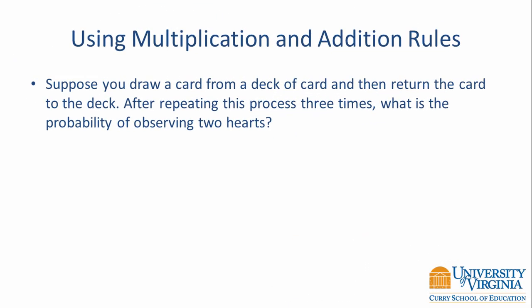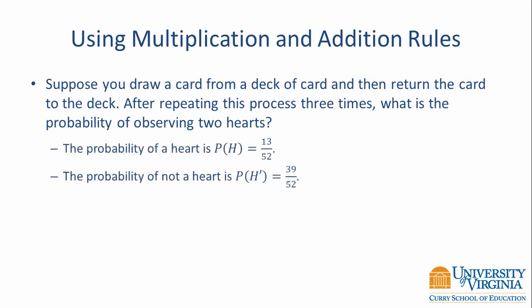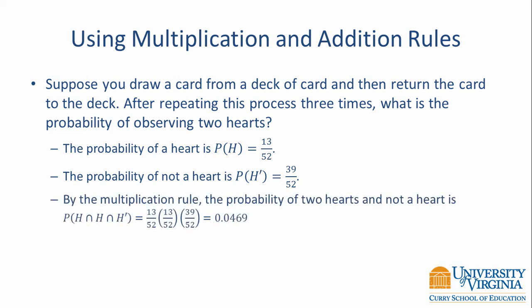In many applications, we use the multiplication rule and the addition rule together. Suppose you draw a card from a deck of cards and then return the card to the deck. After repeating this process three times, what is the probability of observing two hearts? We know that the probability of a heart equals 13/52 because there are 13 cards in a deck that are hearts. The probability of not a heart is equal to 39/52. By the multiplication rule, the probability of two hearts and a not-heart is 13/52 times 13/52 times 39/52, which equals 0.0469.